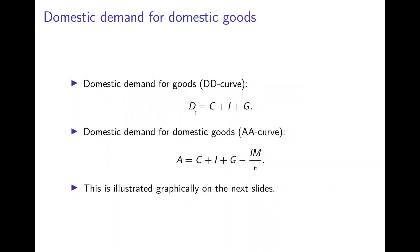In an open economy, we have to consider the difference between the domestic demand for goods — that's consumption plus investment plus government consumption, referred to as the DD curve — and the domestic demand for domestically produced goods, which is domestic demand minus what is imported from abroad. That's the AA curve. We will now illustrate this graphically.